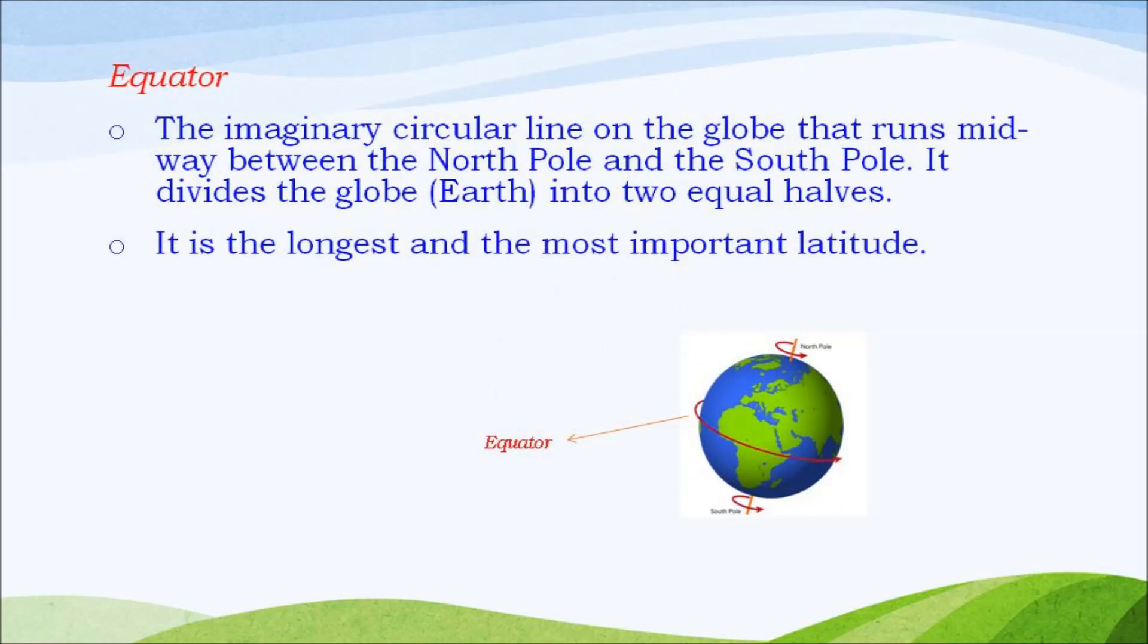Equator is the imaginary circular line on the globe that runs midway between the north pole and the south pole. It divides the globe into two equal halves. Equator is the longest and the most important latitude.